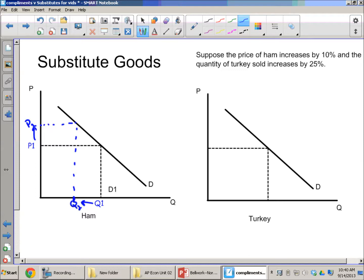And then what we have over here is the quantity of turkey sold increases by 25%. So somewhere around here we now have Q1 up to Q2.